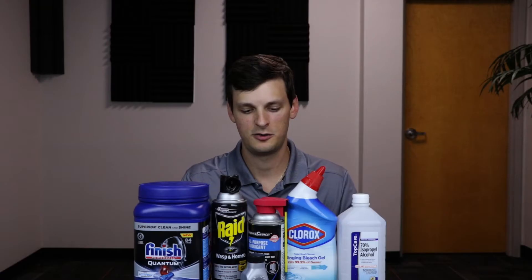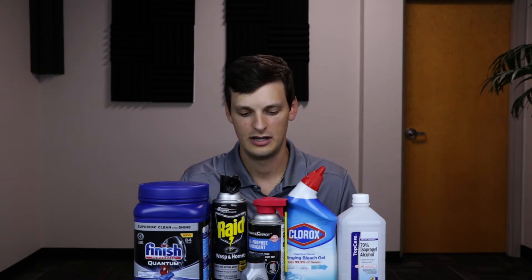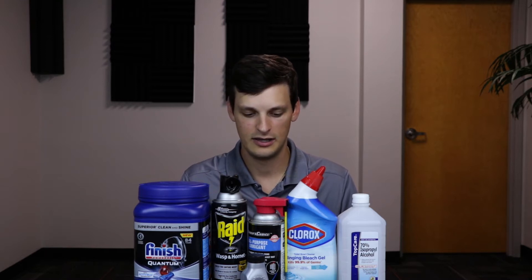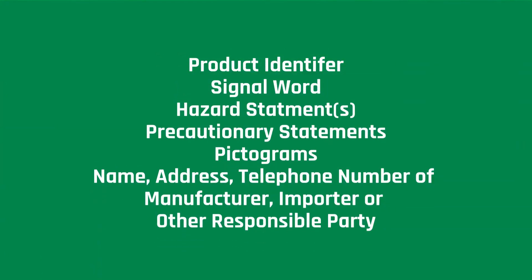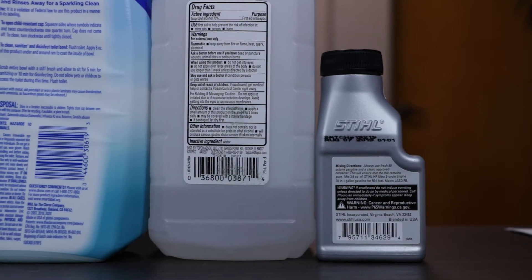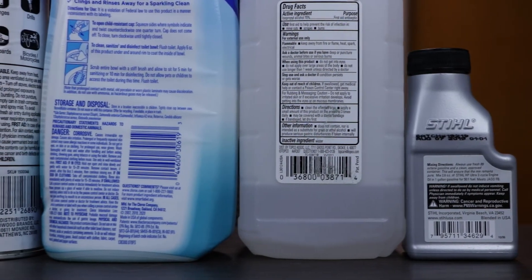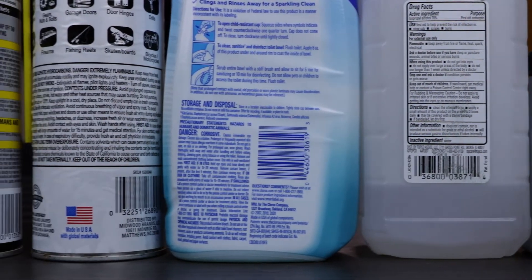The hazardous communication standard requires that chemical manufacturers, importers, and distributors ensure that each container of hazardous chemicals leaving their workplace is labeled, tagged, or marked with the following information: product identifier, signal word, hazard statements, precautionary statements, and pictograms, as well as the name, address, and telephone number of the chemical manufacturer, importer, or other responsible party. For today's video, we will be showing the globally harmonized system of classification and labeling of chemicals, also known as GHS.